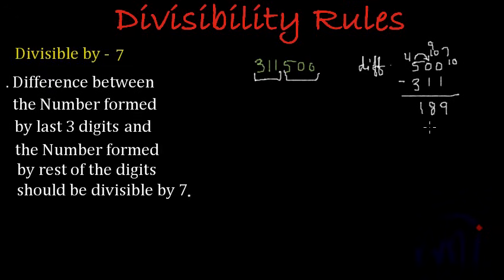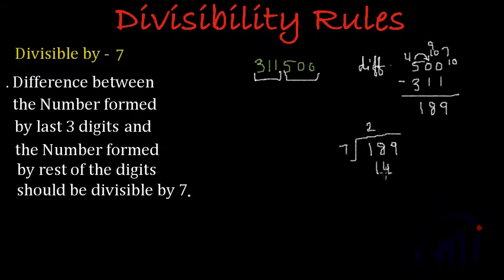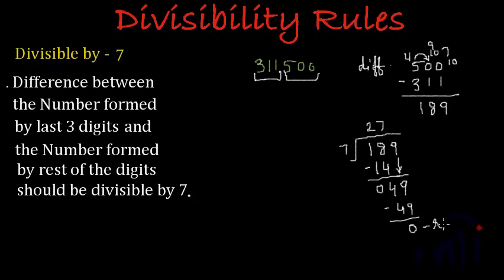We have to divide 189 by 7. If 189 is completely divisible by 7, then 311,500 will also be divisible by 7. Dividing: 7 times 2 is 14; 18 minus 14 is 4. Bring down 9, making 49. 7 times 7 is 49; 49 minus 49 gives remainder 0. So 189 is divisible by 7.